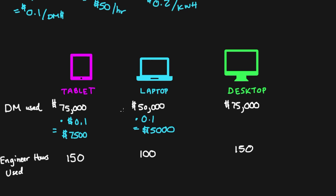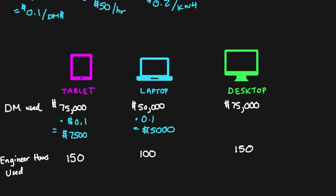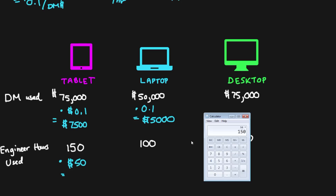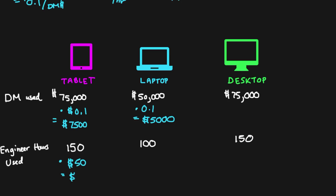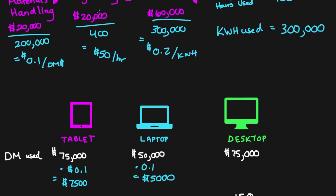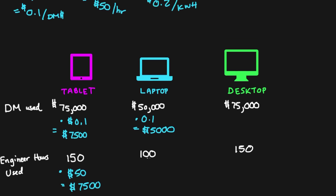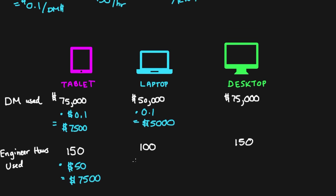The second overhead activity is engineering hours. The tablet used 150 hours, multiplied by the rate of fifty dollars per hour, giving us seventy-five hundred dollars of the twenty-thousand-dollar engineering overhead allocated to the tablet product line. For the laptop product line, it's five thousand dollars.